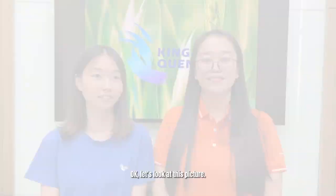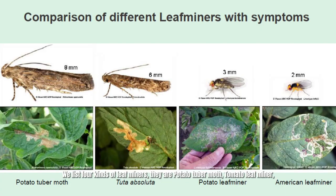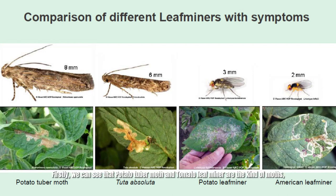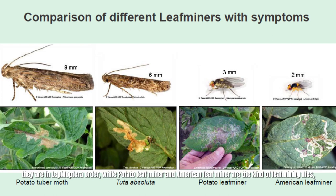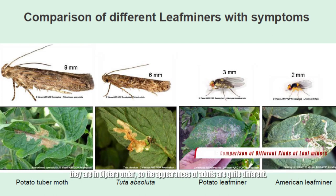Okay, let's look at this picture. We list four kinds of leaf miners: Potato Tuber Moth, Tomato Leaf Miner, Potato Leaf Miner, and American Leaf Miner. Firstly, we can see that Potato Tuber Moth and Tomato Leaf Miner are moths — they are in the Lepidoptera order. While Potato Leaf Miner and American Leaf Miner are leaf mining flies — they are in the Diptera order. So the appearances of adults are quite different.